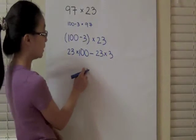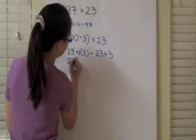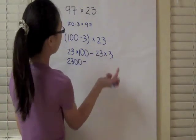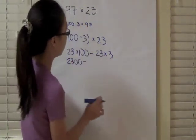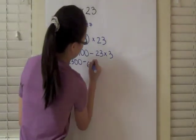And 23 times 100 is a lot easier than 23 times 97 because you just have to add two zeros after 23. And 23 times 3 is also not as bad as 23 times 97 because it's just a one-digit number. So you know that that's 69.